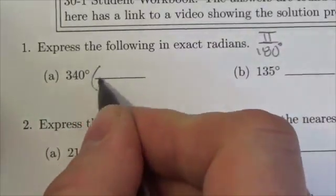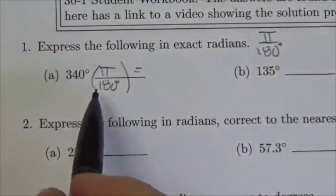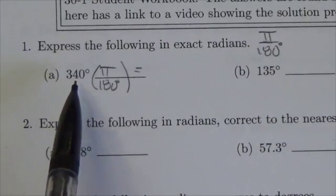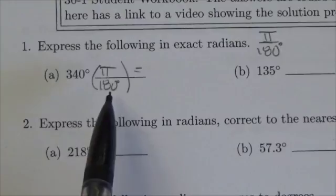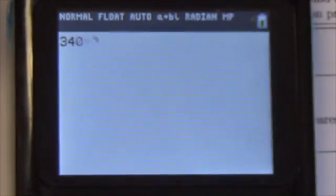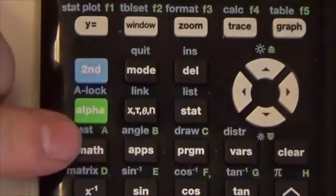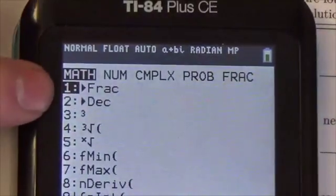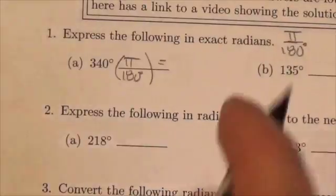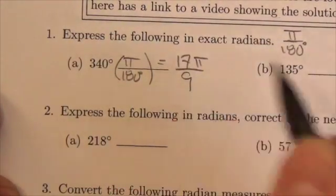We're going to multiply 340 by π over 180. We want this in exact values, as exact radians, so we're going to reduce this fraction. We're going to leave the π in there and reduce the 340 divided by 180. You can do this on your calculator—340 divided by 180 gives you a decimal, but if you press your math button, the first option is convert to fraction. That reduces to 17 over 9, so we're left with 17π over 9. There's the answer.